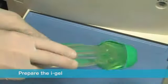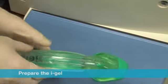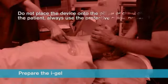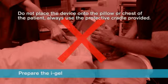Place the iGel back into the cradle in preparation for insertion. Do not place the device onto the pillow or chest of the patient and always use the protective cradle provided.